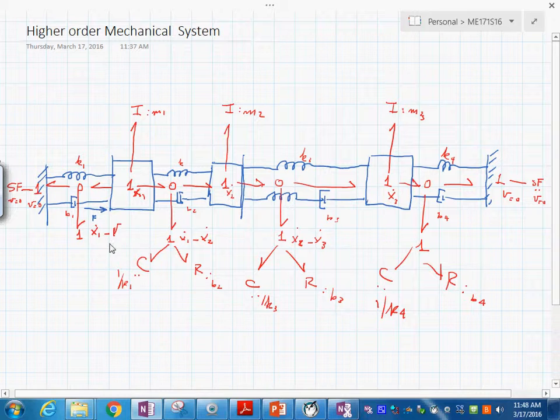And with this, we have done this bond graph model of a mechanical system. Wait, I think you're missing an R. Yeah, we are missing an R element some place. K 5.